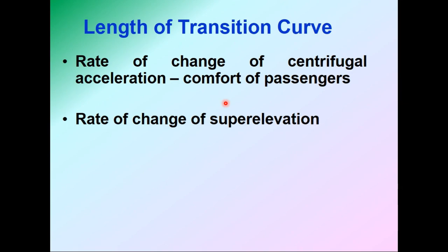The length of the transition curve is also important, and it is decided based on two parameters: the rate of change of centrifugal acceleration, which determines passenger comfort, and the rate of change of providing super elevation.